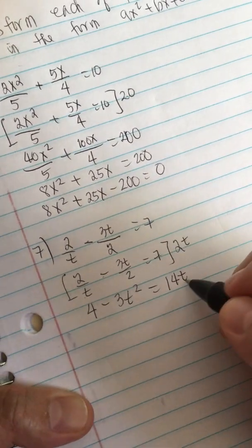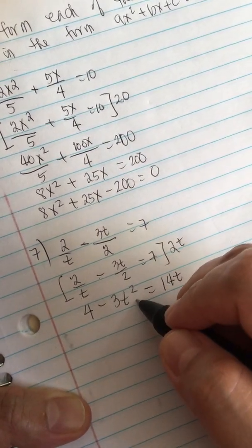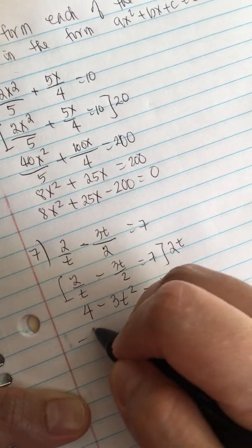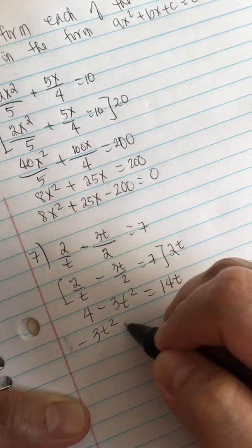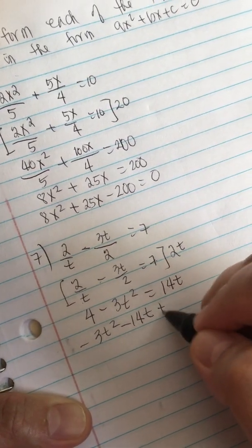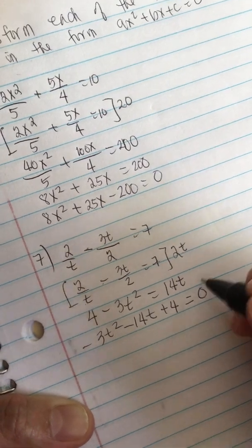Now we just rearrange it. We put this one on this side, so we have minus 3t squared minus 14t plus 4 equals 0.